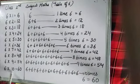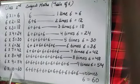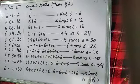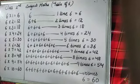Next is 6 10s are 60. It means 10 times 6. And when there is 10 times 6, it is equal to 60.